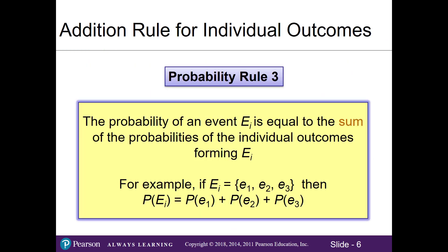Now let's look at rule number 3. The probability of an event of interest is equal to the sum of the probabilities for each individual outcome forming that event of interest. In other words, we just need to add up whatever we're interested in.